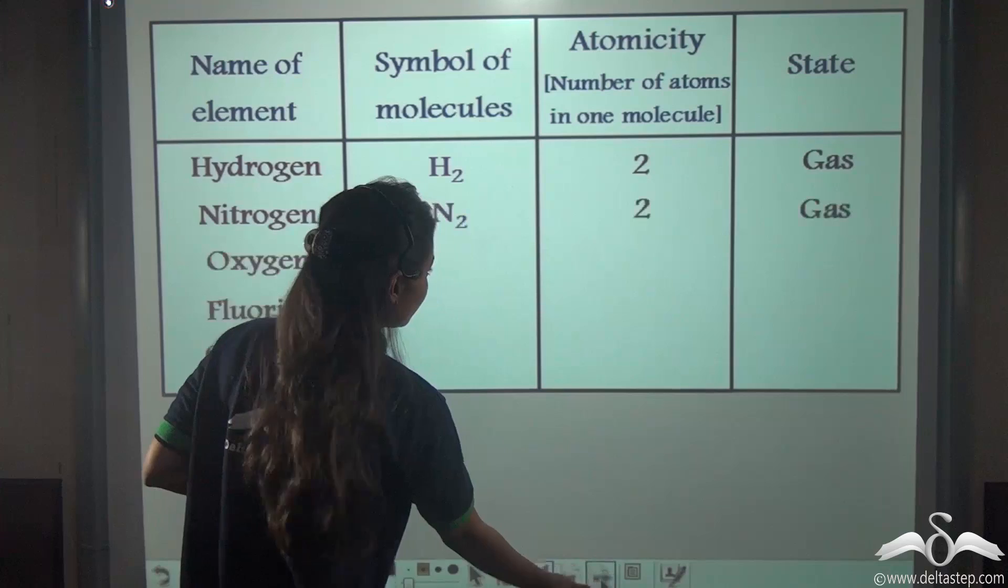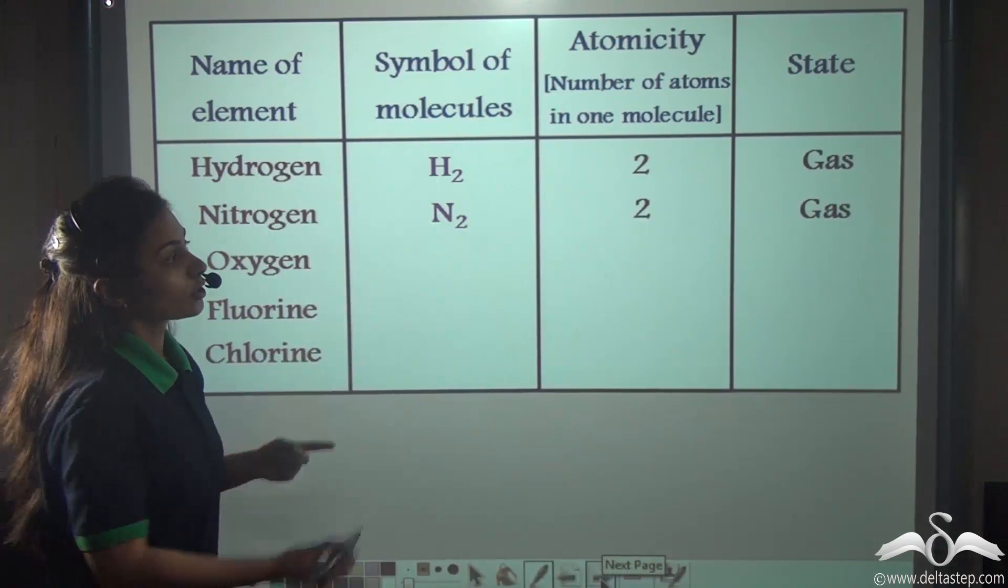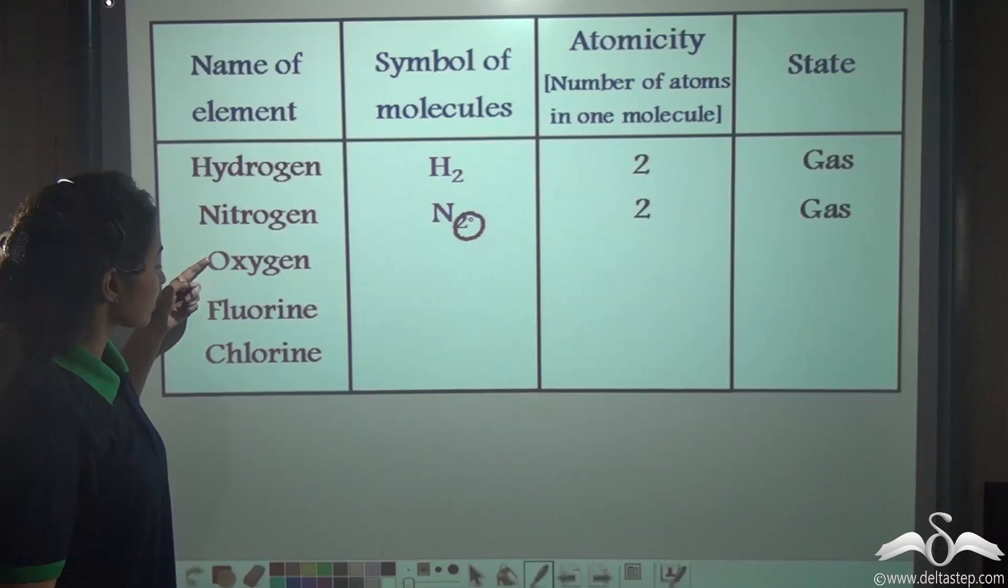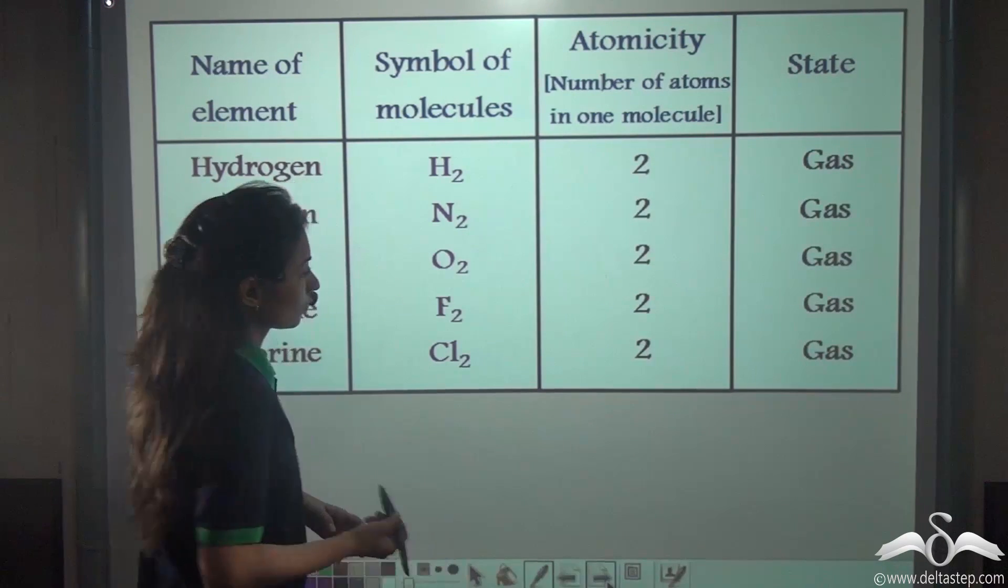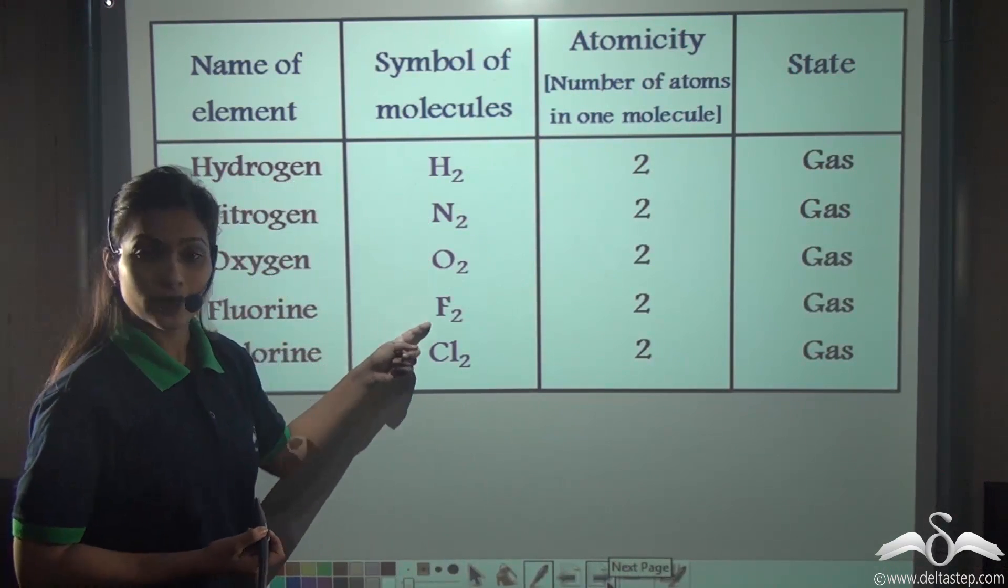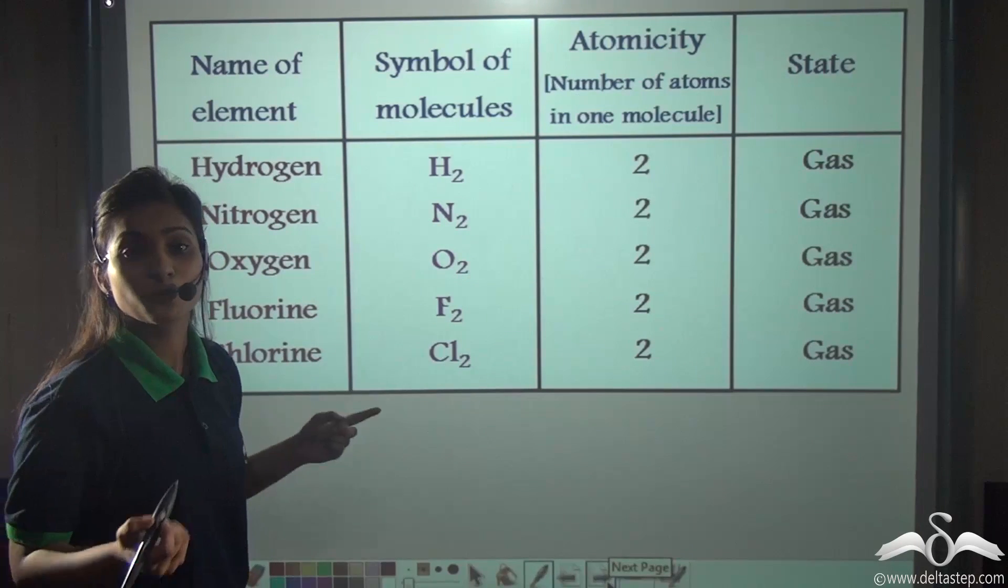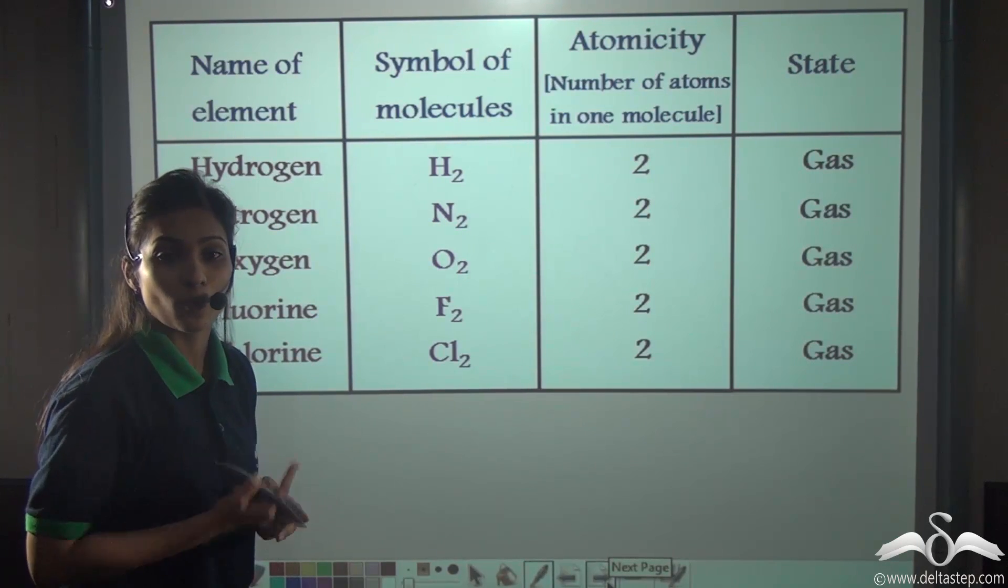Similarly Nitrogen, N2, the atomicity is 2 you can see. Similarly Oxygen, Fluorine and Chlorine. Here you can see that two atoms of each of these gases combined together to form one molecule.